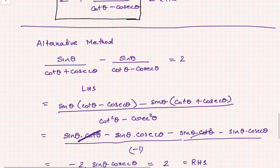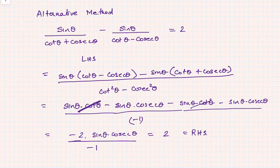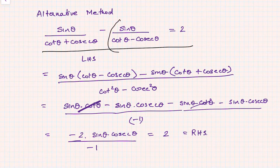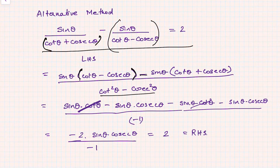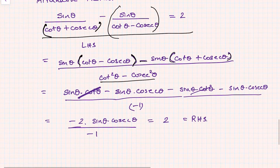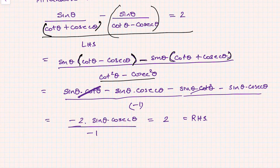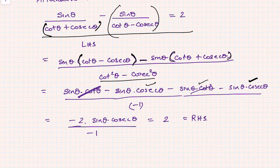Alternatively, there is a much simpler method. You can rewrite the same identity by taking sin θ/(cot θ - cosec θ) — which was on the right-hand side — to the left-hand side. Then simplify the LHS by taking LCM, giving (cot²θ - cosec²θ) in the denominator as sin θ(cot θ - cosec θ), and the numerator becomes sin θ(cot θ - cosec θ) - sin θ(cot θ + cosec θ). Expanding: sin θ cot θ - sin θ cosec θ - sin θ cot θ - sin θ cosec θ.